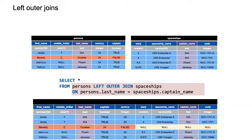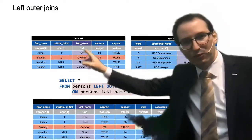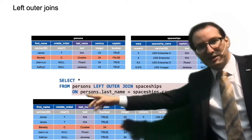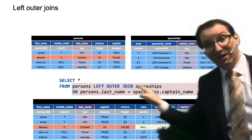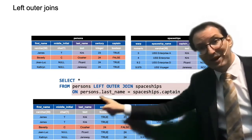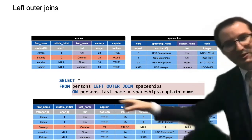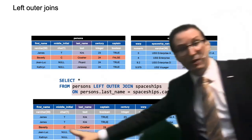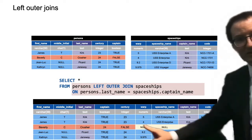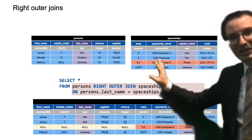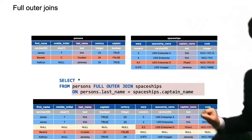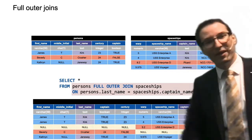Here is an example of a join. We have persons and spaceships tables and try to match persons with captains of spaceships. 'SELECT * FROM persons LEFT OUTER JOIN spaceships ON persons.last_name = spaceships.captain_name' — it reads like English. The reason for LEFT is that persons who are not the captain of any spaceship are still included, but with nulls in the spaceship columns. You can do a RIGHT join to keep spaceships without captains, or FULL OUTER JOIN to keep both.